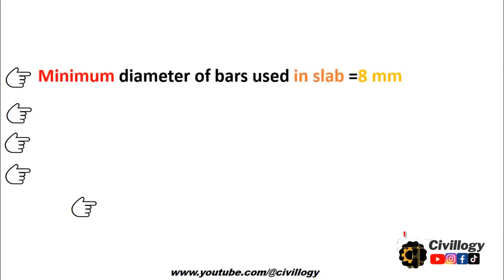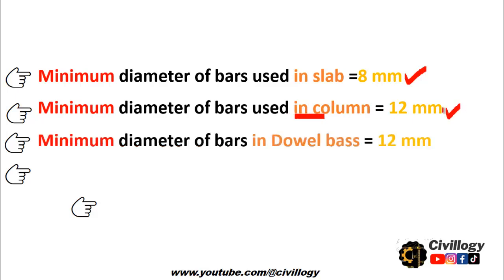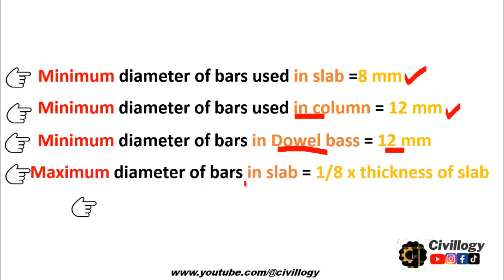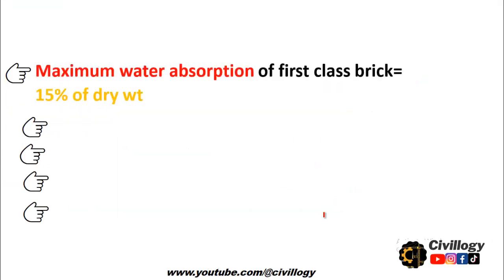The next most important point for civil engineers is that the minimum diameter of bars used in a slab is equal to 8 millimeters. The minimum diameter of bar used in a column should be equal to 12 millimeters. The minimum diameter of bars in dowel bars is equal to 12 millimeters. The minimum diameter of bars in a slab is also equal to 1/8 multiplied by the thickness of the slab. Since the minimum thickness is 5 inches, the minimum bar diameter in the slab should be equal to that product. The maximum chair spacing should be equal to 1 meter from all sides.